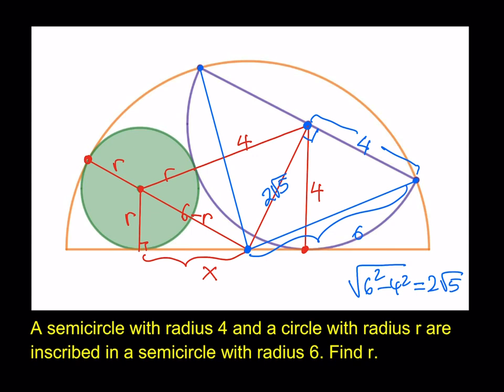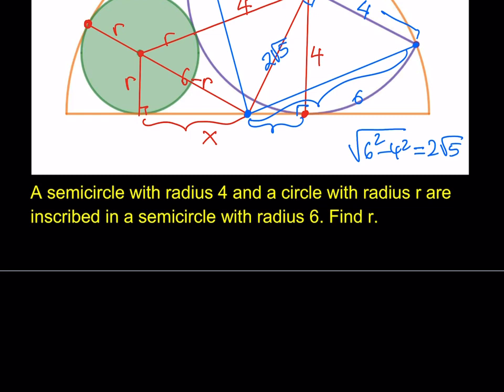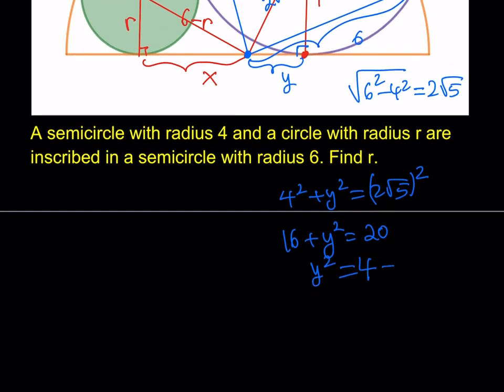How is that going to help us? Well, it's going to help us find this length. Why? Because now we do have another right triangle here, which is nice, isn't it? Now we can use the Pythagorean theorem. Let's just write down the equation. We have 4 squared, and we don't know what that's called, right? Let's call that y. 4 squared plus y squared is equal to 2 root 5 squared, and that would be 16 plus y squared is equal to 20. From here, y squared is equal to 4, which means y is equal to 2.